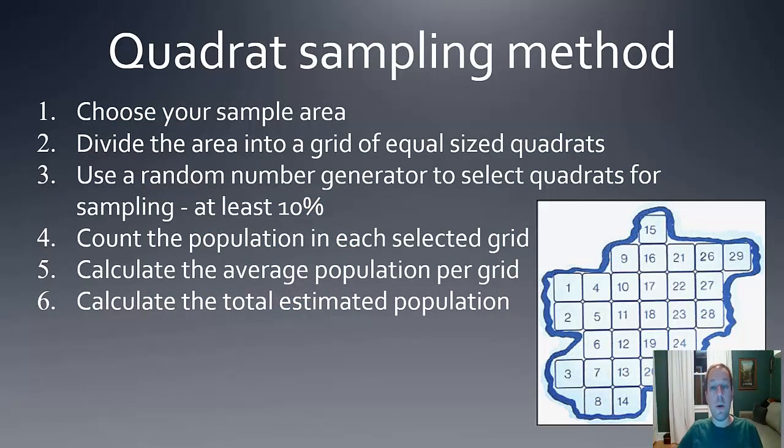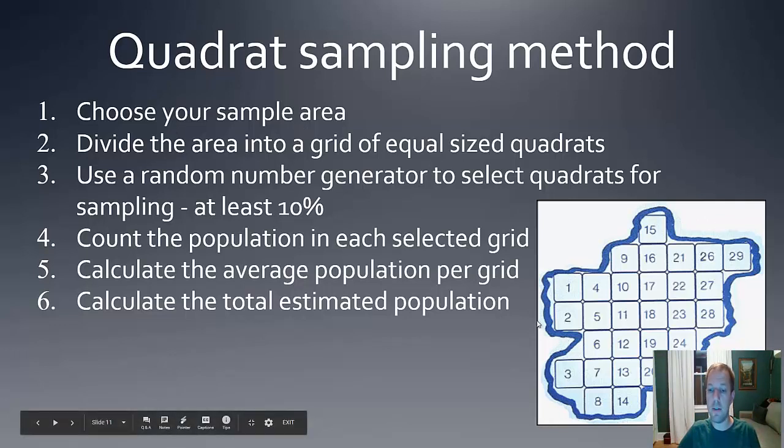Here's an outline of how the sampling method works. Number one, choose your sample area. For example, I've got this section that is highlighted in blue. You're then going to divide that area into a grid of equal size quadrats. So every one of these boxes in equal size, and I recommend for your purposes that you choose boxes that are one square meter.